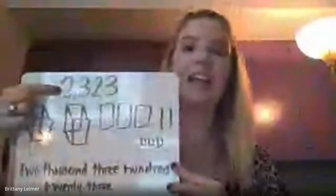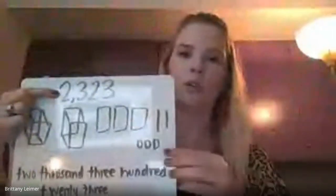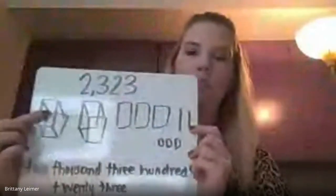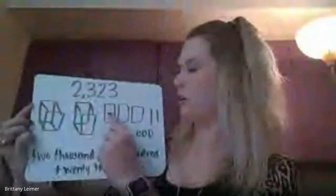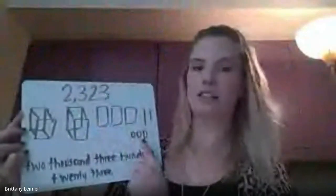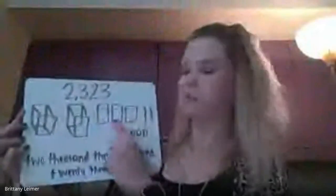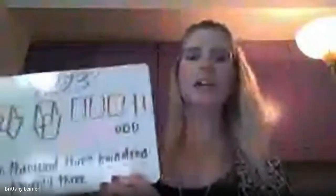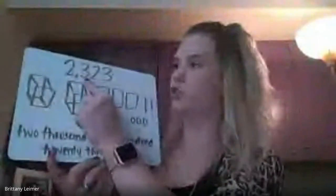So I wrote down the number 2,323. This is the plain old number, so that's standard form. I also drew this number in base 10 form. I have two thousands, so I drew my two thousands cubes. I have three hundreds, so I drew three hundreds. A two in the tens place means I have two tens, so I drew my two tens. And a three in the ones place means I have three ones, so I drew my three ones. Notice how my ones blocks are smaller than my hundreds blocks. And then I wrote it out in words — I said two, then I saw the comma, so I know that means thousand. Three in the hundreds place, so 2,000, three hundred twenty-three.